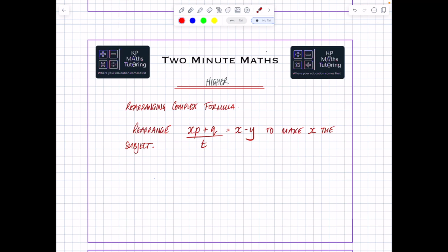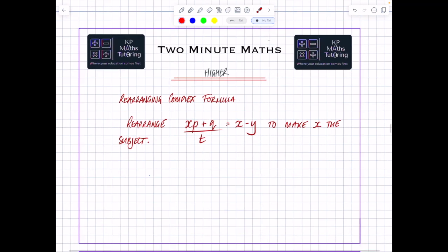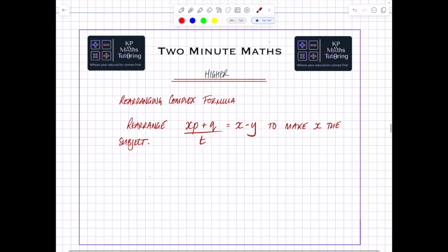Hi everyone, really quick video here on rearranging some complex formulas. This would be towards the end of the paper, so it wouldn't be near the start. The key thing to identify here is it's asking to make x the subject, and I can see I've got an x here but I've also got an x here. So there's two different values of x—that's an xp and that's an x—so they can't go together.